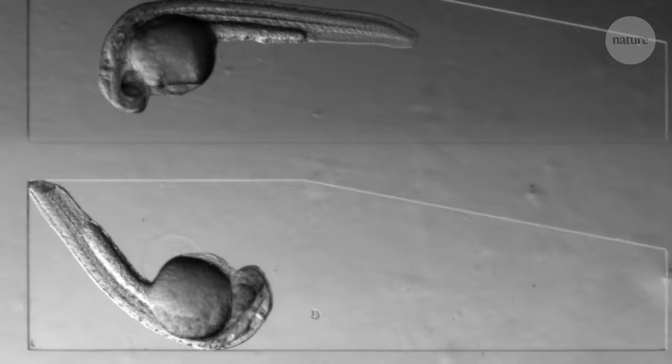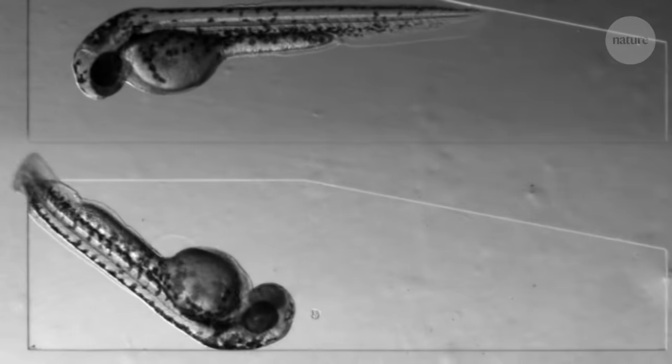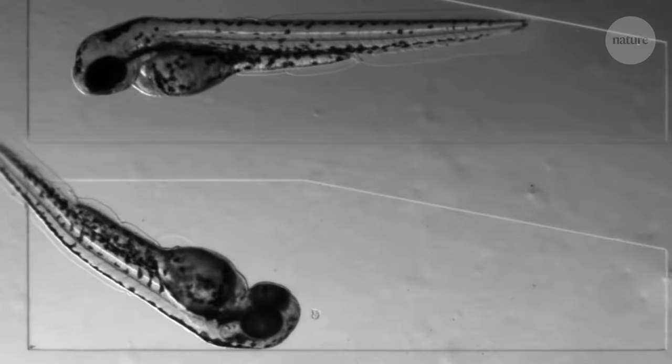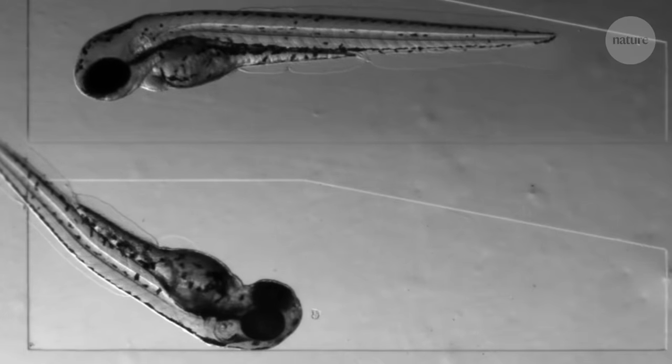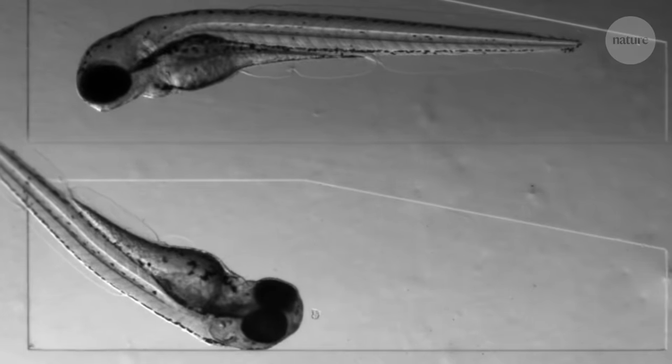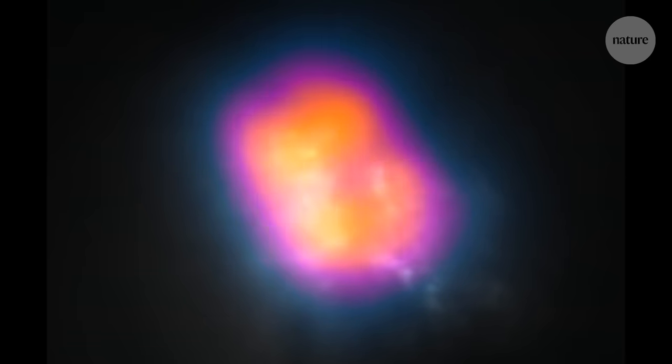In the adult fish, the beating of the heart is controlled by a pacemaker region, a group of cells which control the speed of contractions in the rest of the organ. But for the first heartbeats, the researchers found no clear pacemakers.